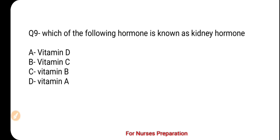Question number 9 is: Which of the following is known as the kidney hormone? Your options are A. Vitamin D, B. Vitamin C, C. Vitamin B, D. Vitamin A.